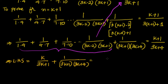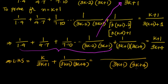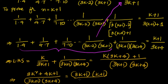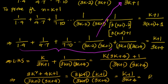Taking the LCM of (3k+1)(3k+4), we get [k(3k+4) + 1] / [(3k+1)(3k+4)]. Expanding the numerator: 3k² + 4k + 1, divided by (3k+1)(3k+4). The numerator 3k² + 4k + 1 factors as (3k+1)(k+1). So (3k+1) cancels, leaving (k+1)/(3k+4), which equals the RHS.